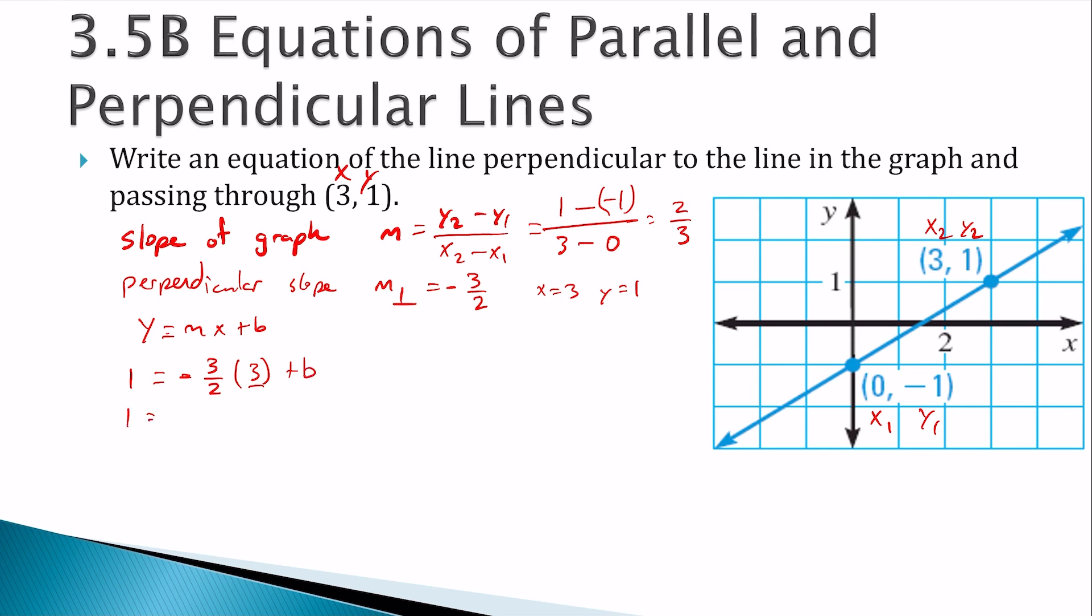To multiply a fraction with a whole number, we put it over 1 and multiply straight across. So 3 times 3 is 9, 2 times 1 is 2, plus b. Add the 9 over 2. Oh, I need a common denominator to add a fraction. So I'm going to multiply the 1 by 2 over 2. So now I have 2 halves plus 9 halves would be 11 halves for b.